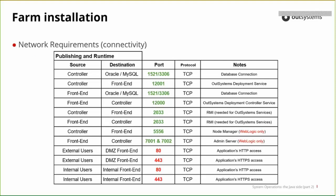Network requirements for publishing and runtime: during publish, the controller needs to communicate with the database on ports 1521 or 3306, depending on whether you're using Oracle or MySQL. The controller communicates with the frontend through the deployment server on port 12001 so applications can be deployed. The frontend also needs to communicate with the database on the same ports. The frontend communicates back to the controller on port 12000. Since we use Java and the Java remoting object, the RMI port 2033 also needs to be open between the servers.